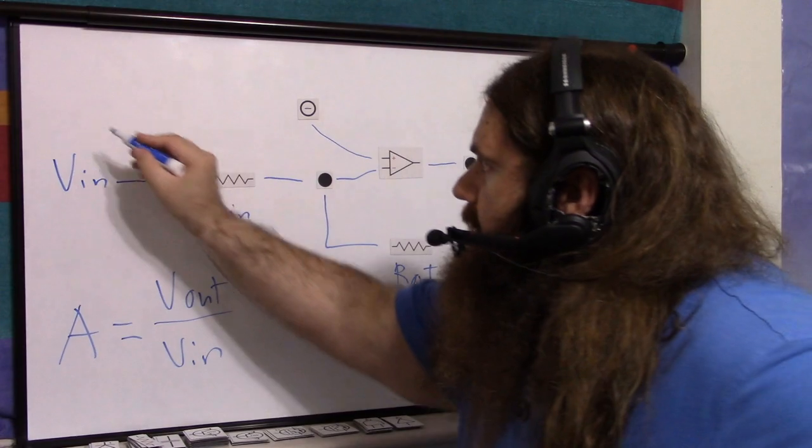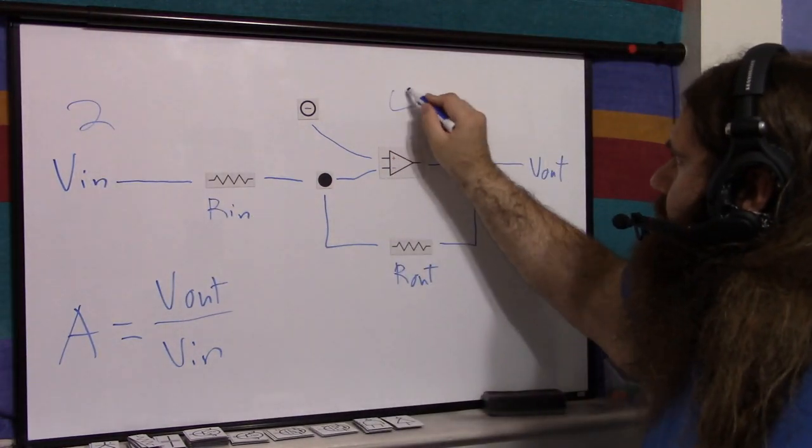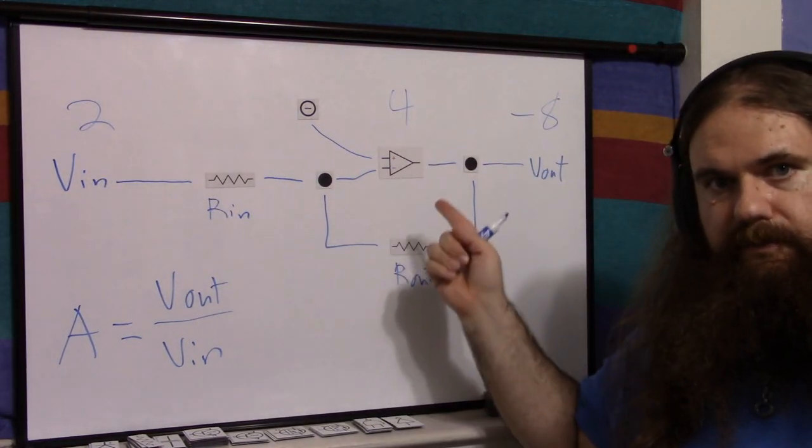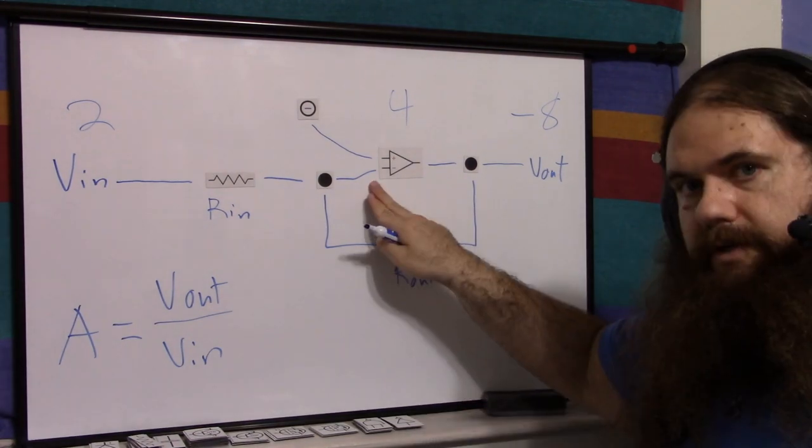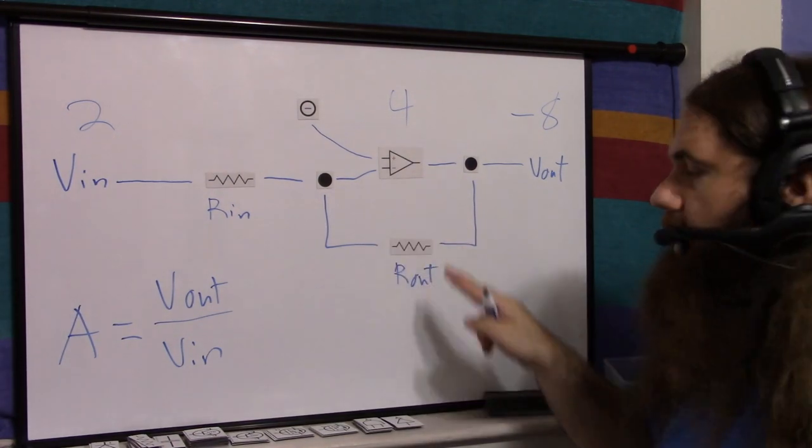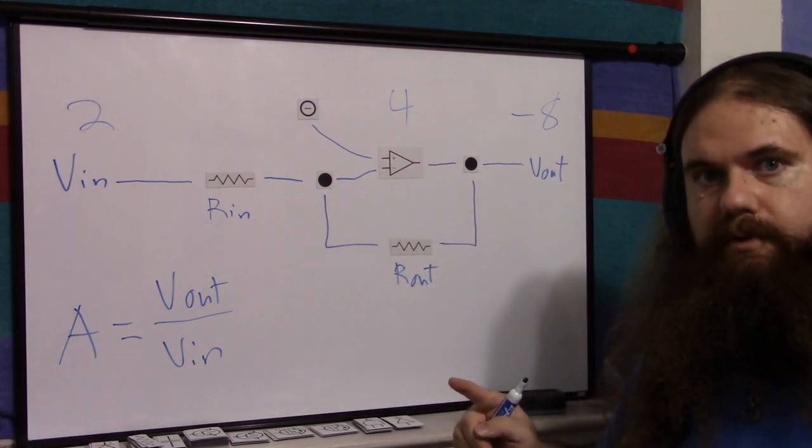Vin times the gain equals Vout. If we call our gain A is Vout. Gain is Vout divided by Vin. That's our ratio. It has absolutely nothing to do with the op amp's gain. It has nothing to do with the op amp's input. We specify the gain and this signal. So this signal might be two and the gain might be four. So the Vout would be negative eight. Two times four is eight, inverting negative eight.